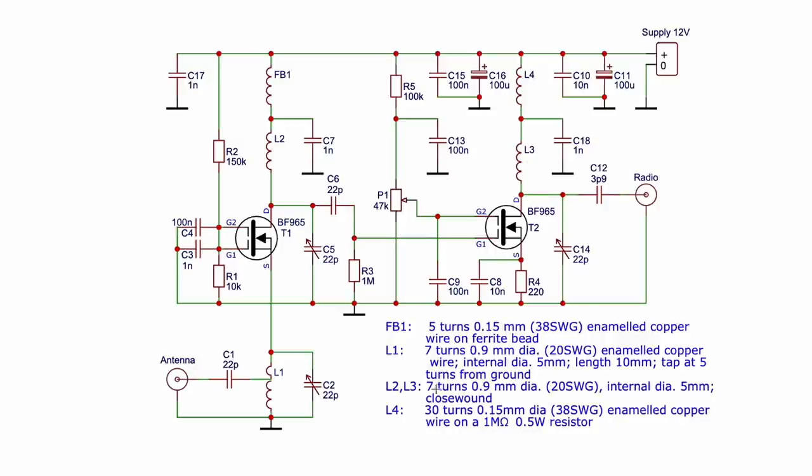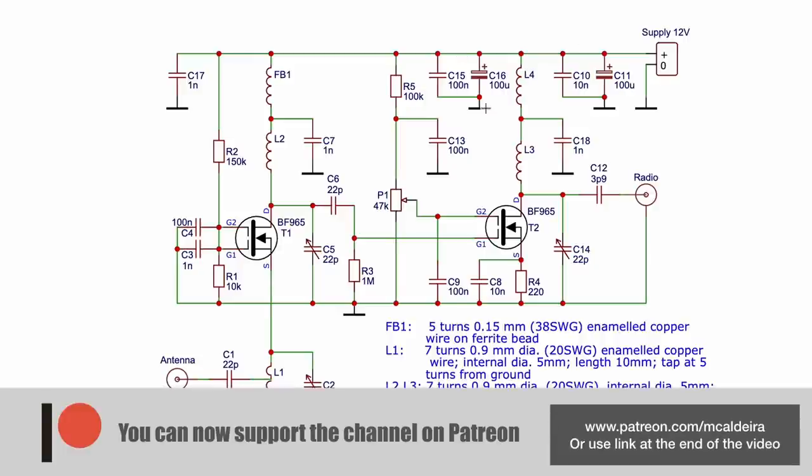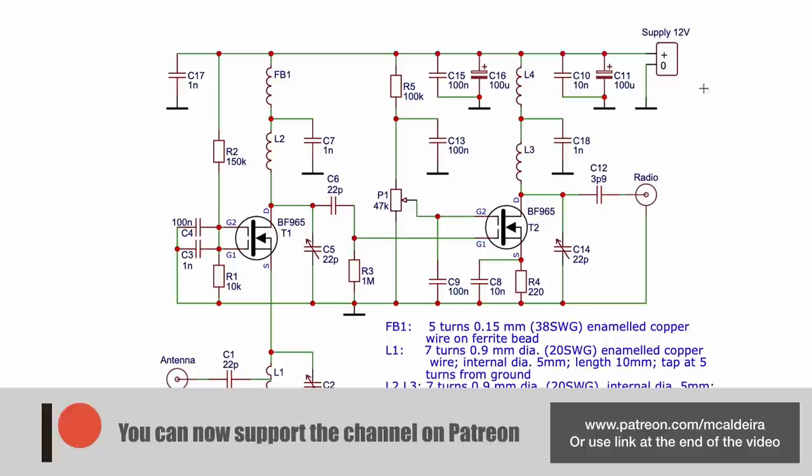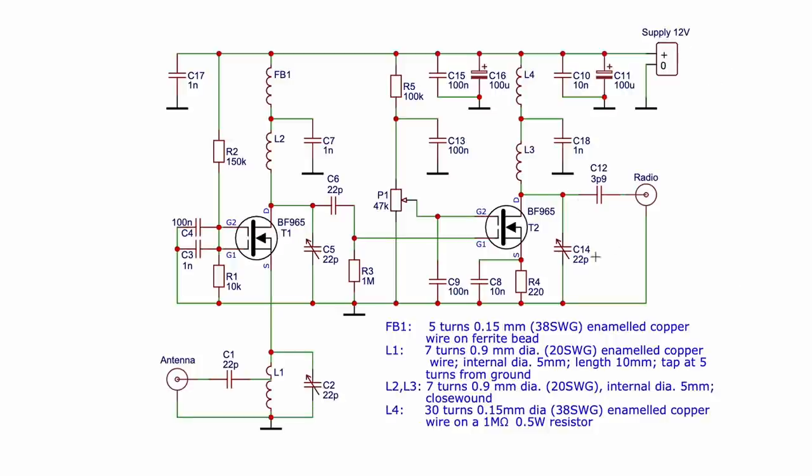This is the second coil L3, which is the same as L2. And L4 is different - 30 turns of thinner wire, 0.15 millimeter diameter, wound on a 1 megaohm 0.5 watt resistor. This has to be a carbon resistor, so you're using the resistor as a coil former. I'm feeding the supply straight onto here. I'm not putting this next to the antenna.